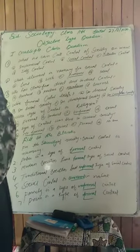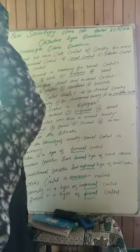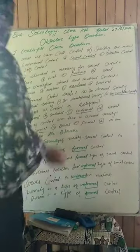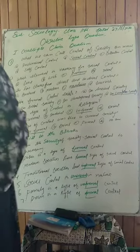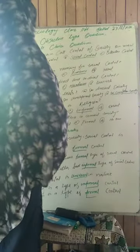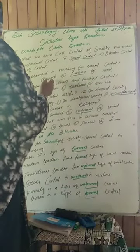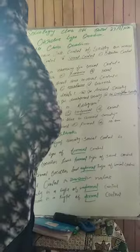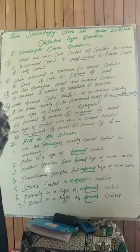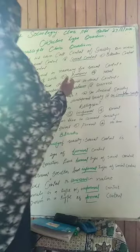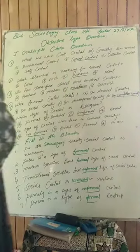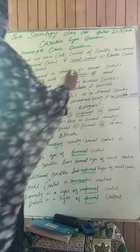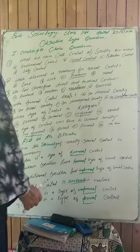Now move towards next one. Which element is necessary for social control? Social control ke liye kaunsa element necessary hai? The options are: love, wish, pressure, or idea. The appropriate answer is C, that is pressure. Pressure is necessary for social control. Without pressure, society cannot be brought under control.